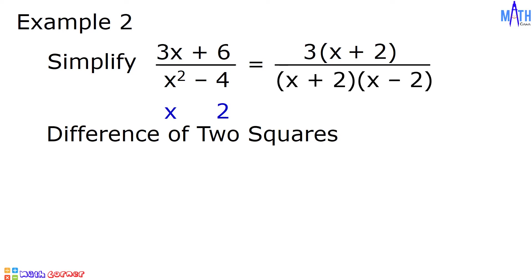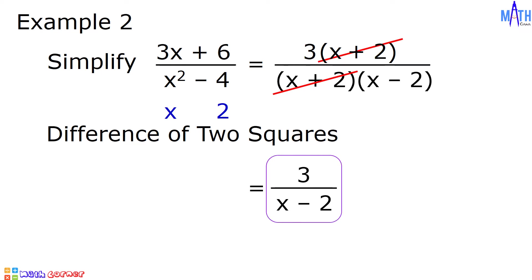Our next step, let us cancel the common factor. Let us cancel x plus 2, and we are left with 3 over x minus 2. This is the simplified form of 3x plus 6 over x squared minus 4.